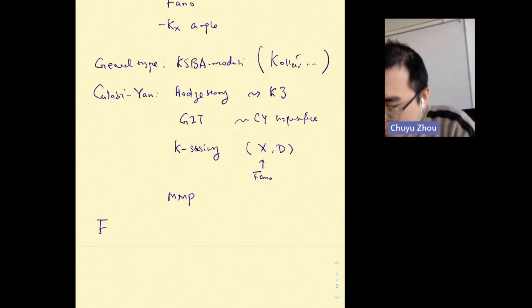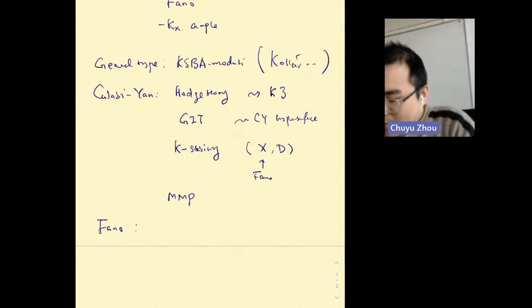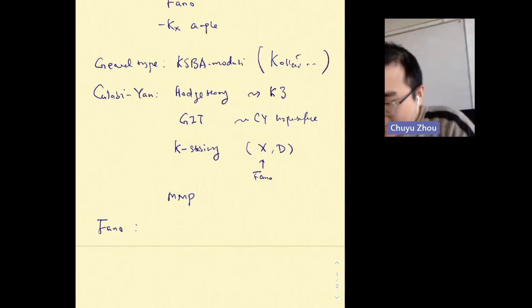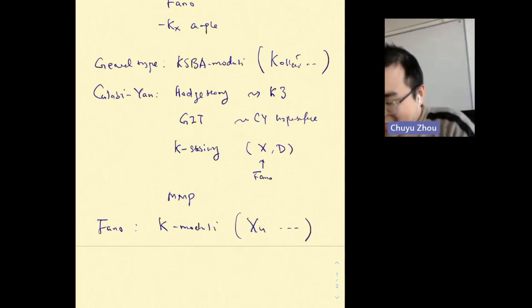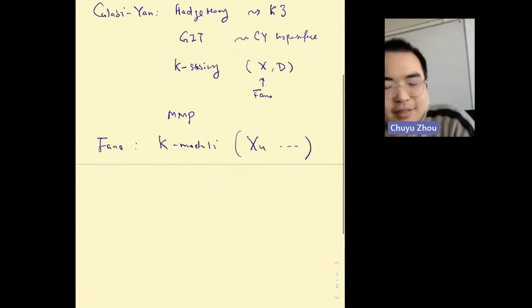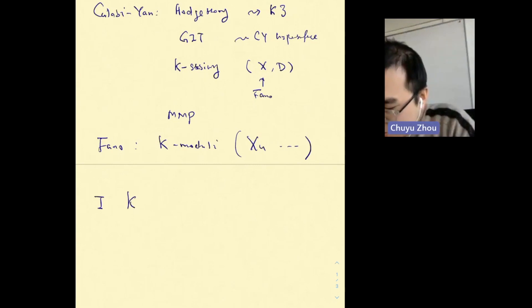For Fano varieties, in the past few years there has been rapid progress on the construction of moduli, and it turns out that K-stability is a suitable concept to construct these moduli spaces. The moduli is known as K-moduli, developed by Xu and many other people. Today we will focus on Fano varieties and the K-moduli space.